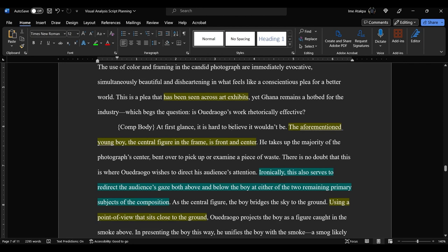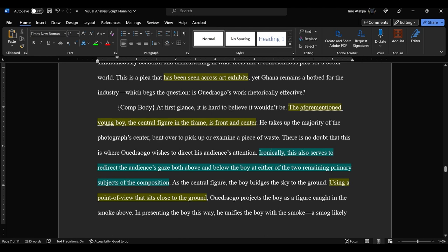Looking forward, aforementioned young boy, central figure in the frame, front and center. So by saying that he's the central figure in the frame, that's the emphasis. He's front and center, his position within the framing. So I have that. He takes up the majority of the photograph center bent over to pick up or examine a piece of waste. This right here, that's also narrative action. This serves to redirect the audience's gaze both above and below the boy at either the two remaining primary subjects of the composition. So that's part of my analysis.